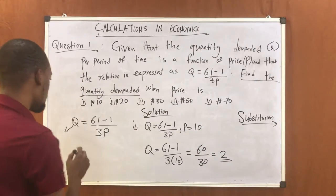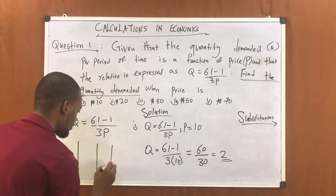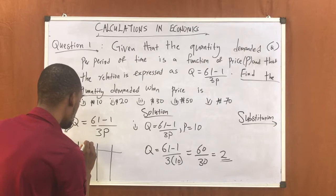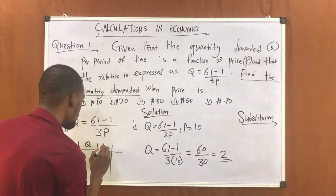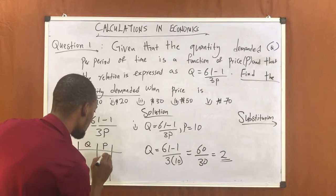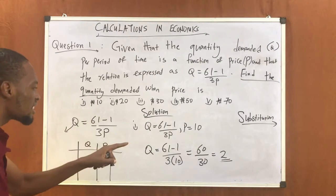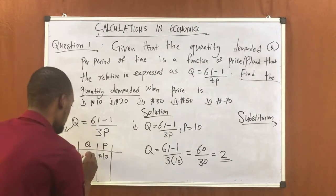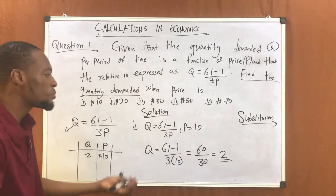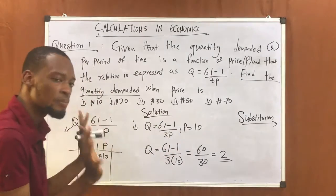This tells you: you can draw a table with Q and P. At price equals 10 Naira, quantity demanded is 2. Simple, right? So it's just substitution — we replace P with the given price value.